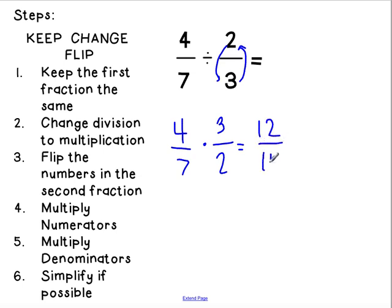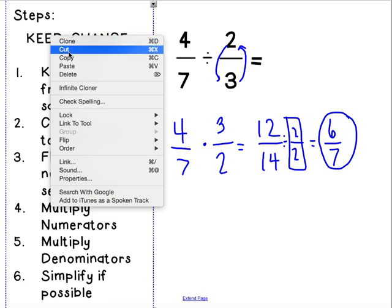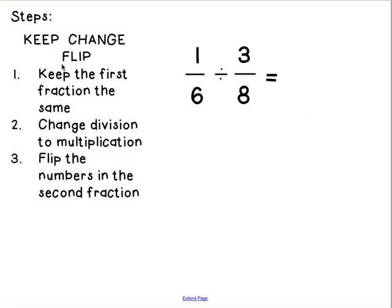So, we have 4 times 3 is 12. 7 times 2 is 14. I know they are both divisible by 2. So, I'm going to show that dividing by 2 over 2. 12 divided by 2 is 6 and 14 divided by 2 is 7. Can't simplify. So, my final answer is 6 over 7.